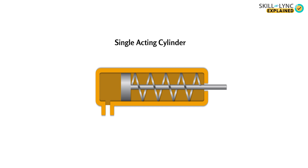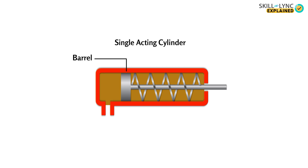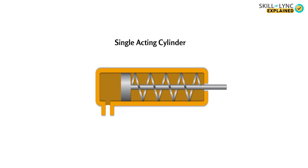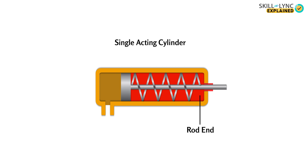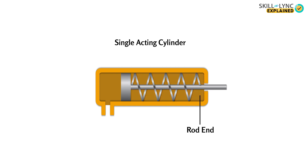A single acting cylinder has a port at one end of the cylinder for the entry and exit of the hydraulic fluid. The cylinder housing, also called a barrel, has a piston inside that is connected with a rod. As the fluid enters the blank end, the rod is extended outside the cylinder from the other end, called the rod end.